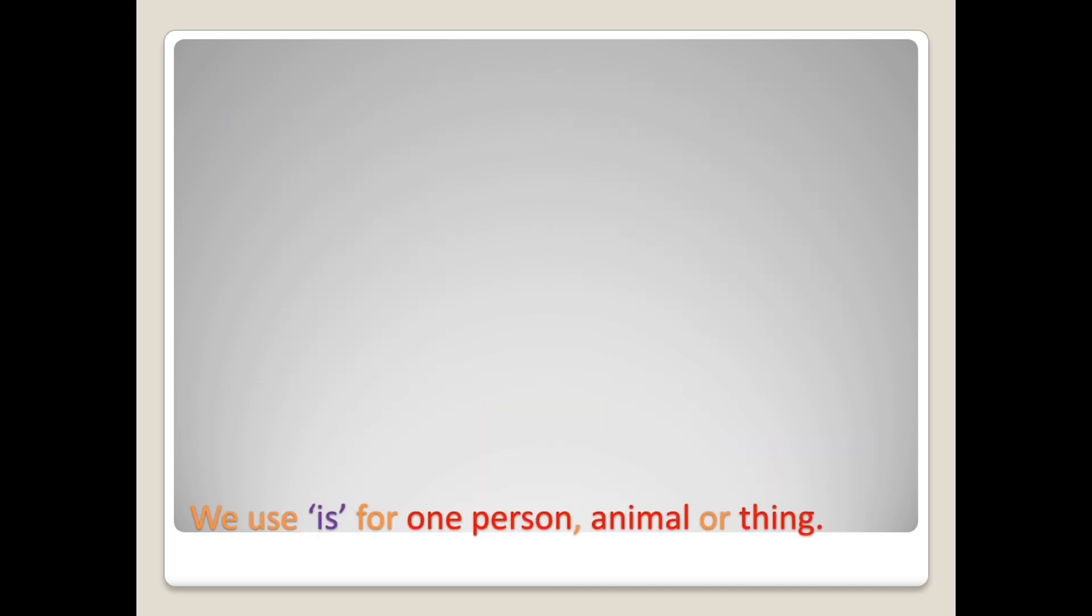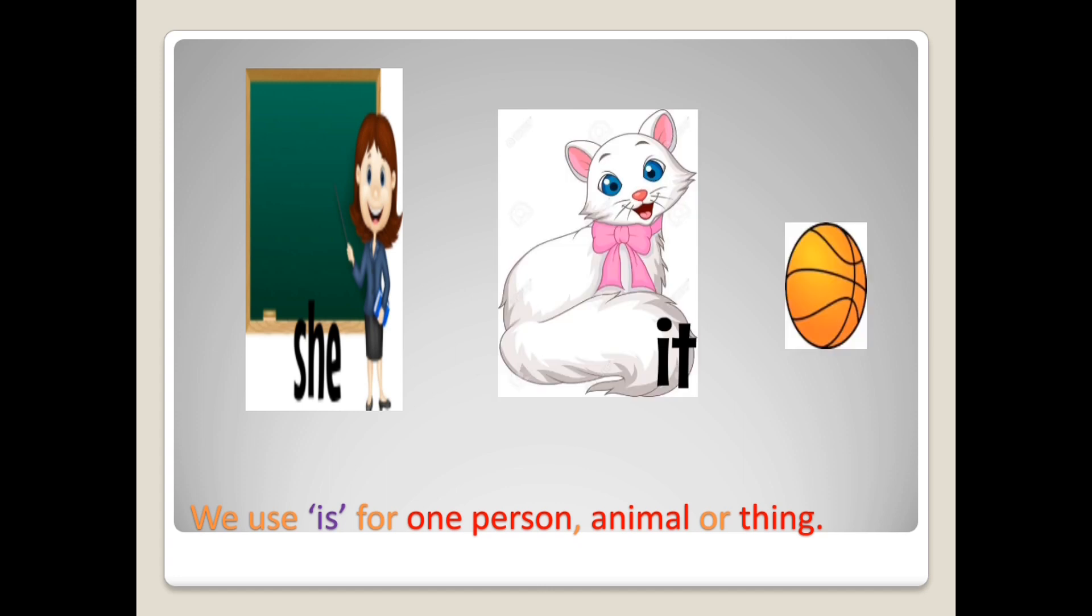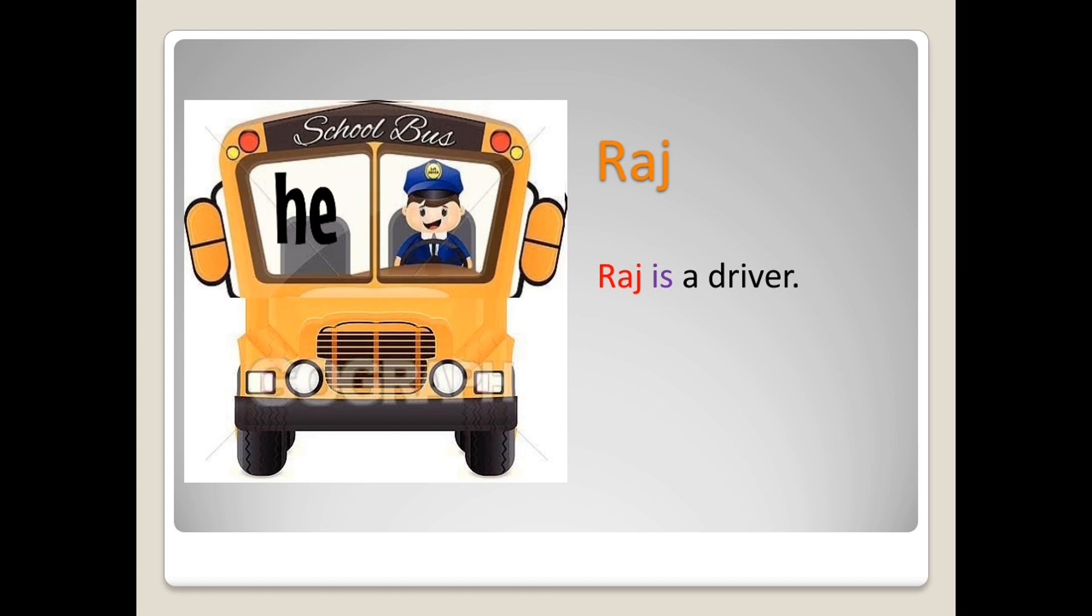We use is for one person, animal, or thing. Let us look at some examples. Raj is a driver. He is driving.